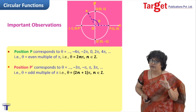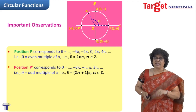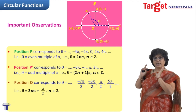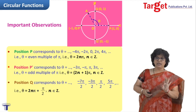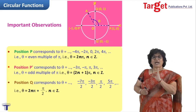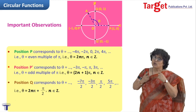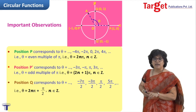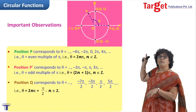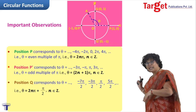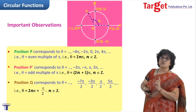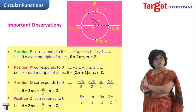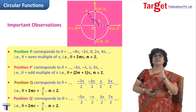Position Q appears when point A travels a quarter circle from P, which is 90° or π/2. Adding 2nπ to π/2 — where 2nπ is any even multiple of π — keeps the point at position Q. So position Q appears whenever the angle theta is 2nπ + π/2. For position Q', moving in the clockwise direction from P gives −π/2, and adding 2nπ gives 2nπ − π/2 as the corresponding angle. So 2nπ − π/2 is the angle for position Q'. These four positions are extremely important.